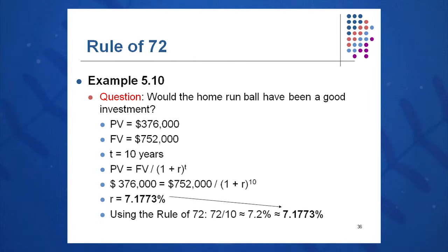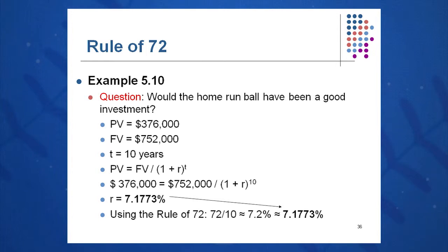This rule of 72 works for time or for rates between 5% and 20%. Once you start getting into large numbers it starts to diverge a little bit. So remember the rule of 72: 72 divided by R equals approximately t.